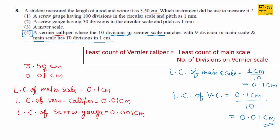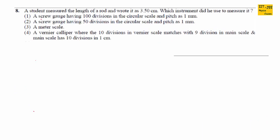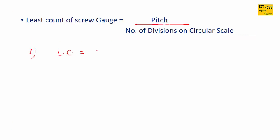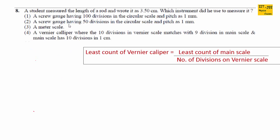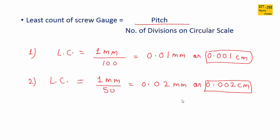If we hadn't found the answer, we would also check the screw gauges. Using least count = pitch / number of circular scale divisions: for screw gauge option 1, pitch = 1 mm and divisions = 100, giving 0.01 mm or 0.001 centimeter. For screw gauge option 2, pitch = 1 mm and divisions = 50, giving 0.02 mm or 0.002 centimeter. Neither matches 0.01 centimeter, so both screw gauge options are incorrect.